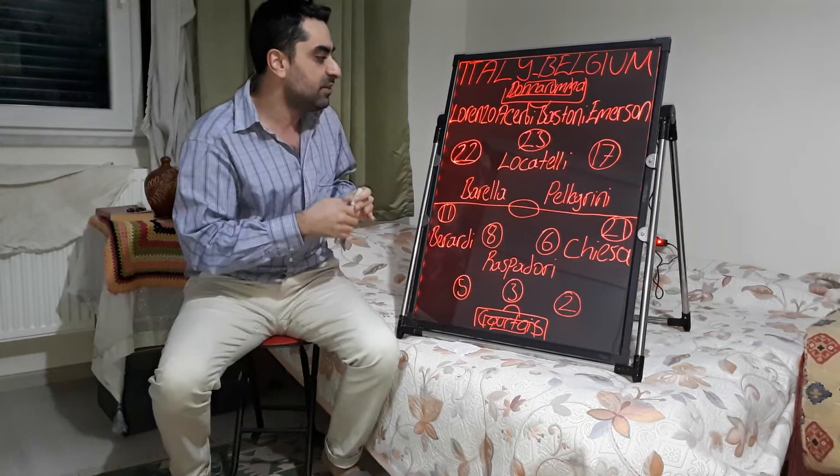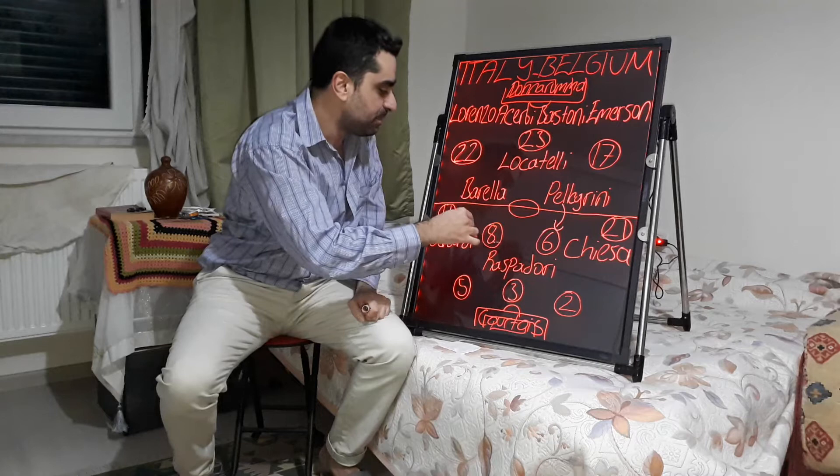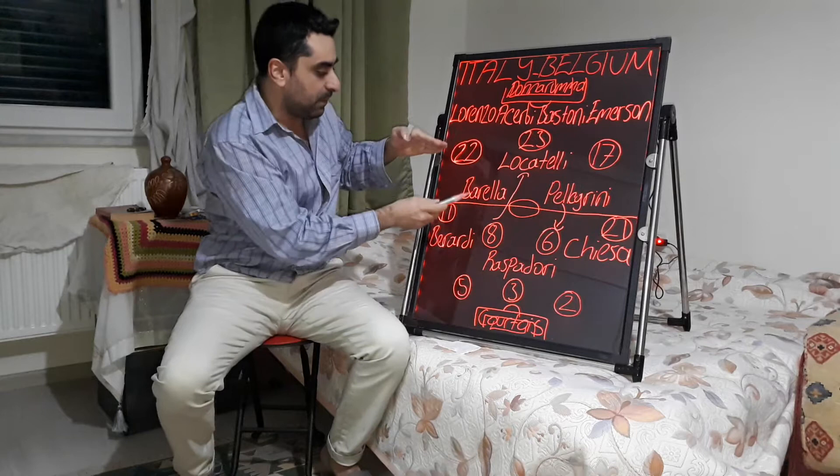In the first half on the midfield, Pellegrini made a higher press on Axel Witsel, and at the same time Tielemans made a higher press on Locatelli. Sometimes Barella moved close to Tielemans on the midfield.